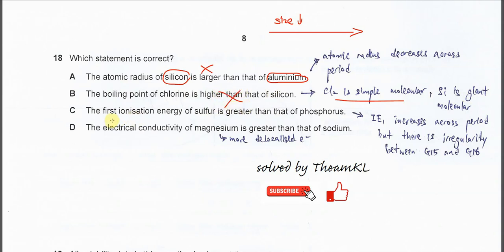For C, the first ionization energy of sulfur is greater than phosphorus. This is a comparison of group 16 and group 15. We know that group 15 has the higher first IE compared to 16.